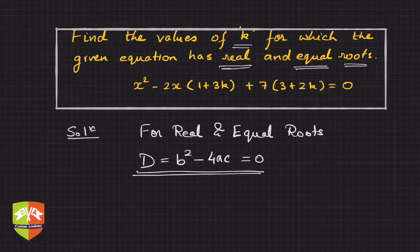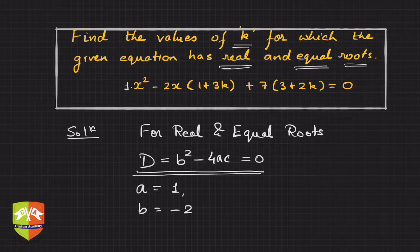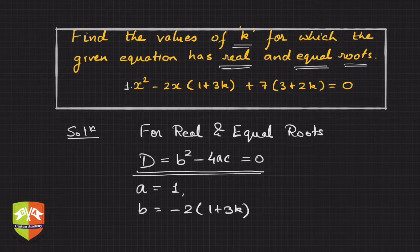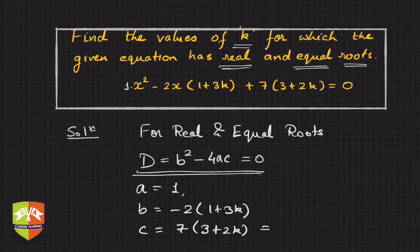So what are a, b, and c in this case? Clearly a is 1 — it is 1 times x squared. b is minus 2 times (1 plus 3k), since anything associated with the variable x is b. And c is 7 times (3 plus 2k), which is 21 plus 14k.